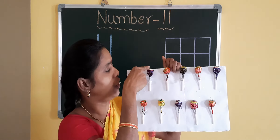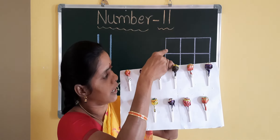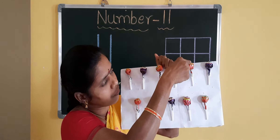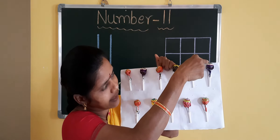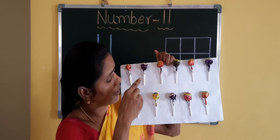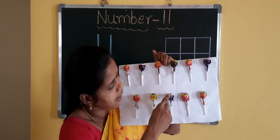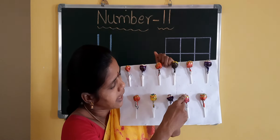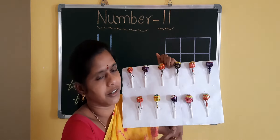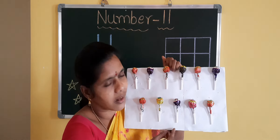1, 2, 3, 4, 5, 6, 7, 8, 9, 10, 11. You can see the 11 lollipops.